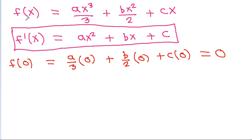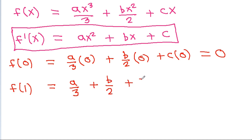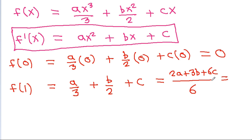If we put x equal to 1, then f of 1 will be equal to a by 3 times 1 cubed, which is 1, plus b by 2 plus c. Taking 6 as the LCM, we get 2a plus 3b plus 6c, and 2a plus 3b plus 6c is equal to 0.